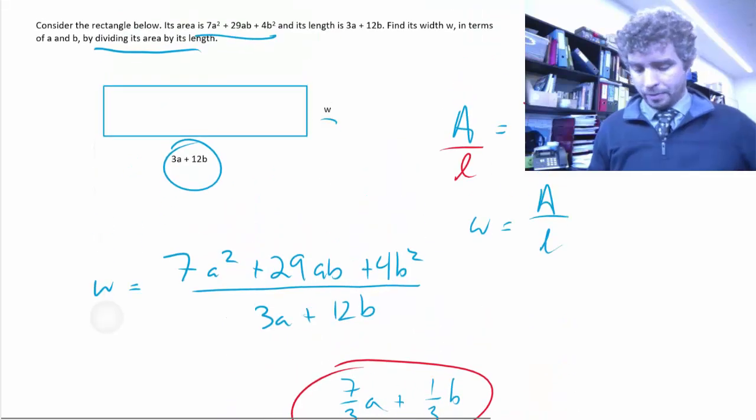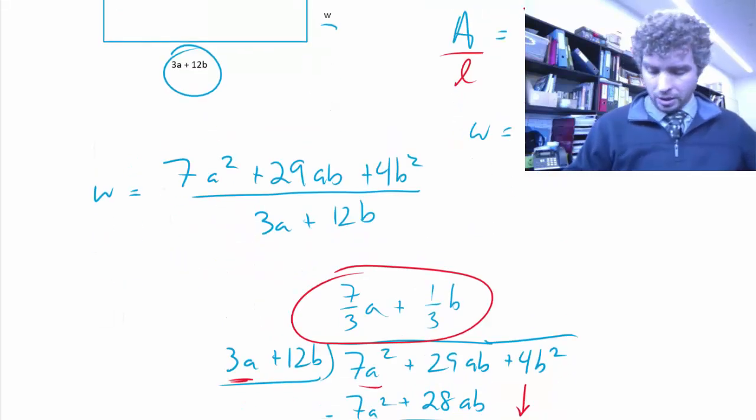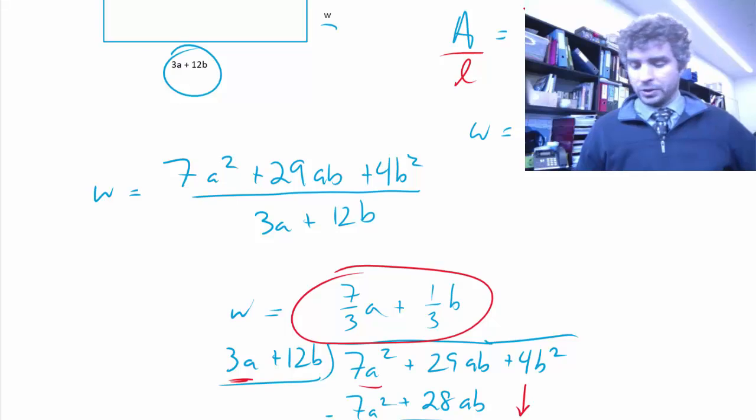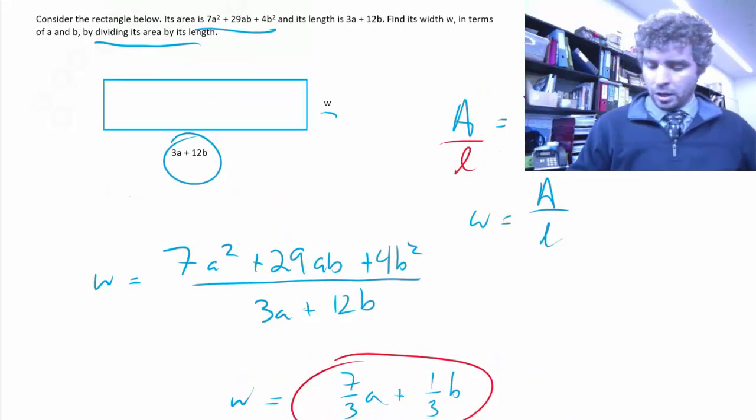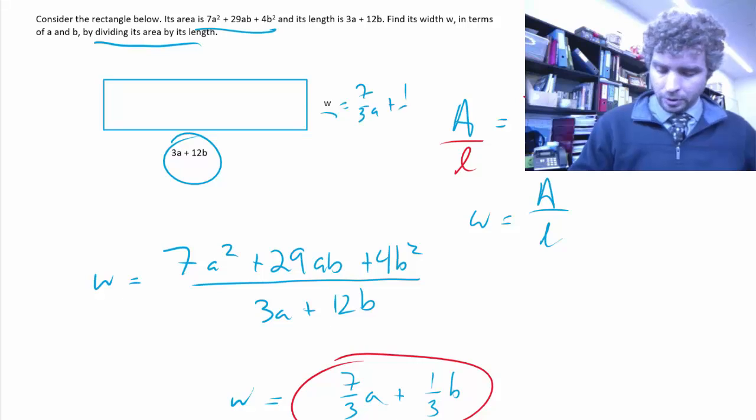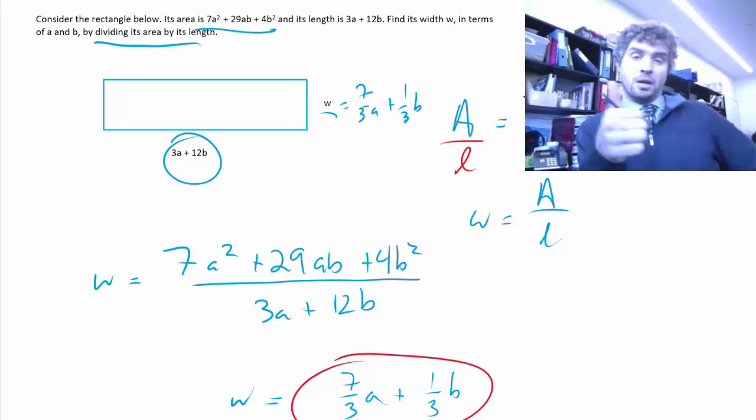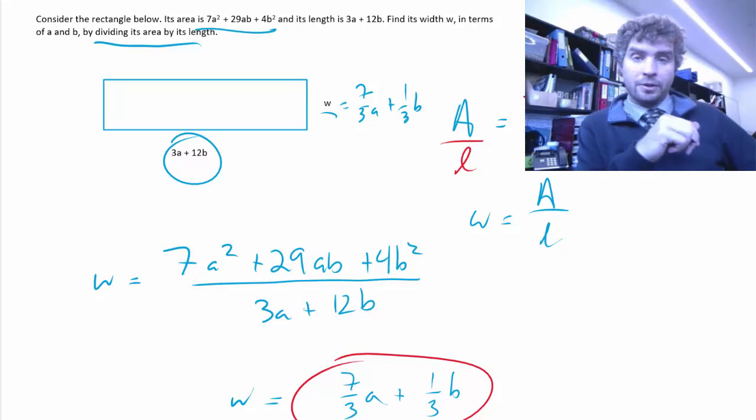So, we could go back up, and we could just say w equals that. We could write it in our little box here if we wanted to. 7 thirds a plus 1 third b. That's it. Hope that helps. Catch you later.